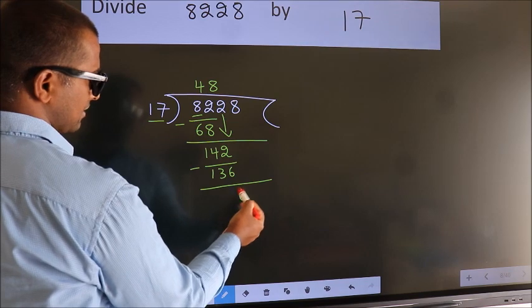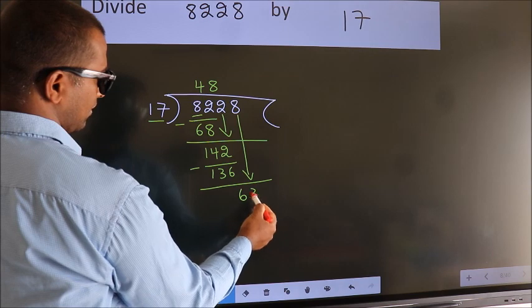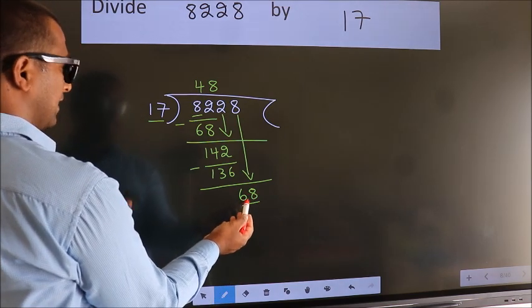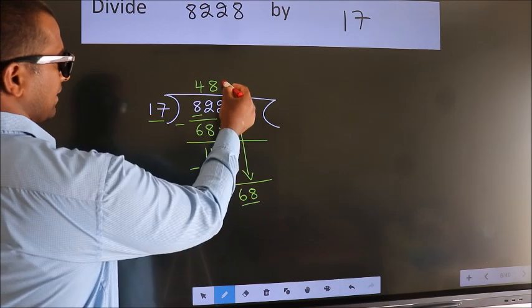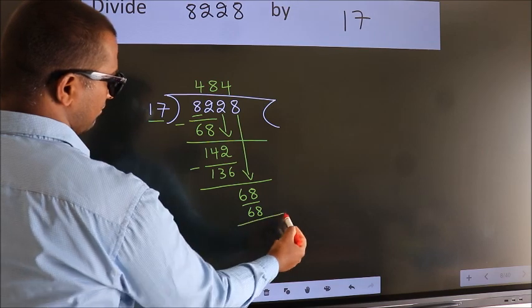After this, bring down the next number, so 8 down, so 68. When do we get 68 in the 17 table? 17 times 4 is 68. Now we subtract. We get 0.